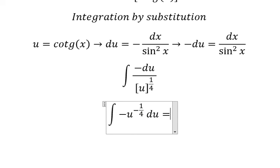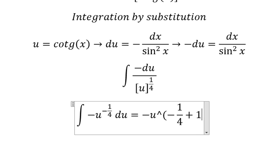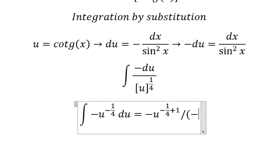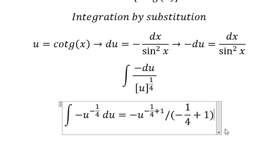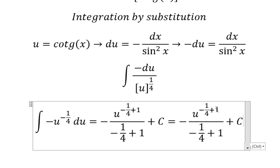the integral gives u to the power of negative one-fourth plus one, over negative one-fourth plus one, plus C. Simplifying the exponent gives three-fourths.